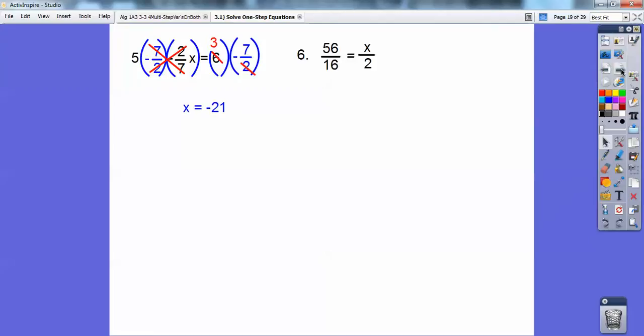On this one here, whenever you have a fraction equal in a fraction, it's called a proportion. And we've done this before, cross multiply on proportions. But on this guy, I'm not going to multiply 56 times 2 and divide it by 16. See if you can reduce this. Make these numbers smaller.